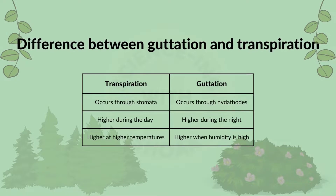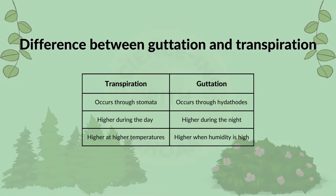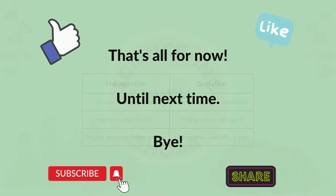Transpiration occurs through stomata while guttation occurs through hydathodes. The rate of transpiration is higher during the day and the rate of guttation is higher during the night. The rate of transpiration is higher at higher temperatures and the rate of guttation is higher when the humidity is higher.